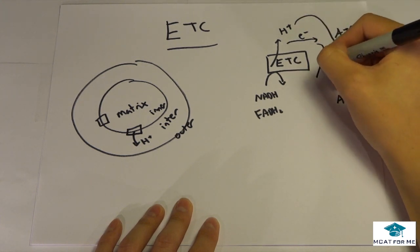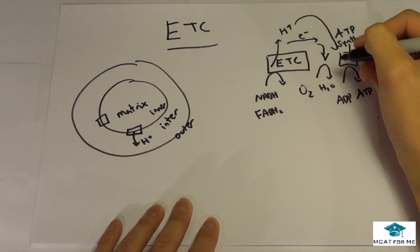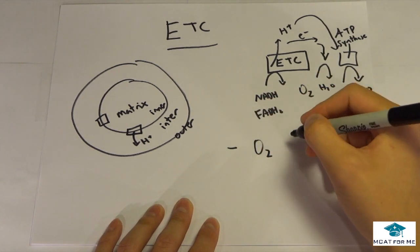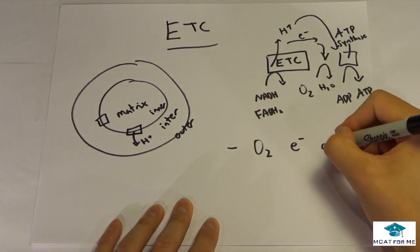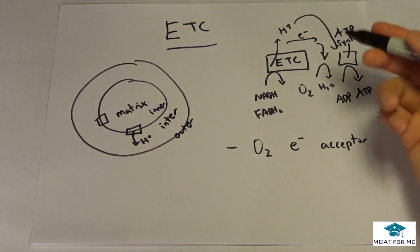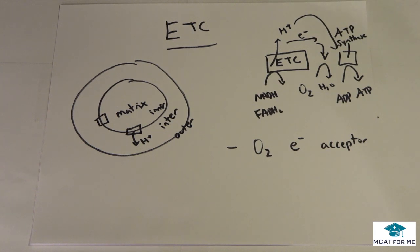These electrons are going to be accepted by oxygen. So what's important for the ETC? Oxygen is the electron acceptor. Oxygen will accept electrons and form water. But for people, for humans, oxygen is the electron acceptor. For other things, that's not necessarily the case. You don't necessarily need oxygen in order to fuel the ETC for bacteria, for archaea, stuff like that.